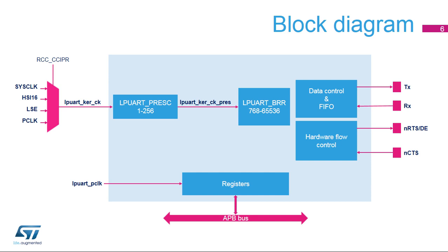TX and RX pins are used for data transmission and reception. NCTS and NRTS pins are used for RS-232 hardware flow control. The driver-enabled pin, named DE, which is available on the same I/O as NRTS, is used in RS-485 mode.